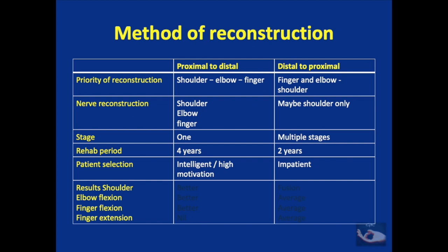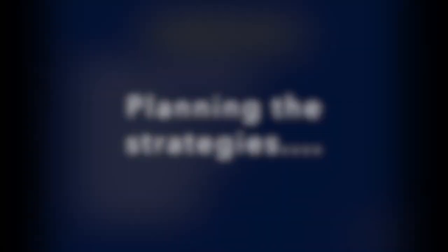Highly intelligent or motivated patients are selected for proximal-to-distal reconstruction. Although it takes longer — approximately 4 years rehabilitation — the proximal-to-distal reconstruction is expected to yield better results for shoulder, elbow flexion and finger flexion, though finger extension is not very good. In distal-to-proximal reconstruction, results of elbow flexion, finger flexion and finger extension are average but the shoulder is usually fused. Available donors for nerve reconstruction include: available proximal roots in rupture cases, the phrenic nerve, the spinal accessory nerve, intercostal nerves 2 to 7, and the contralateral C7 root using a vascularized ulnar nerve graft.